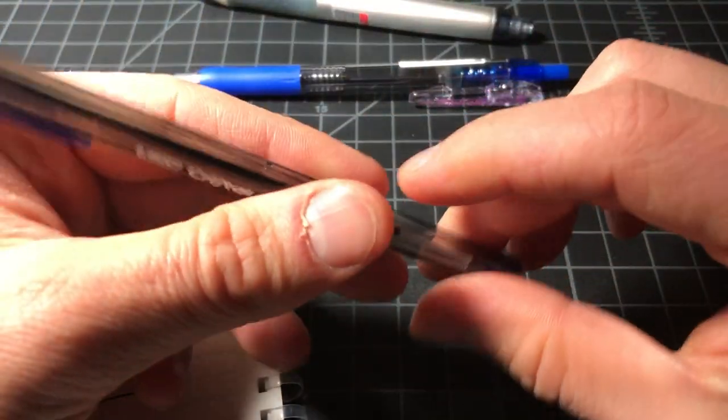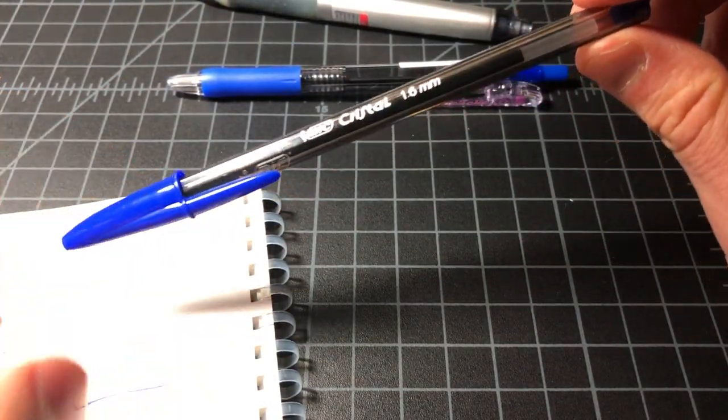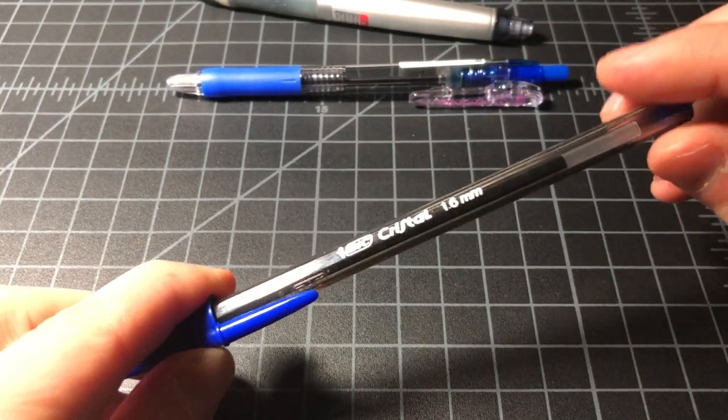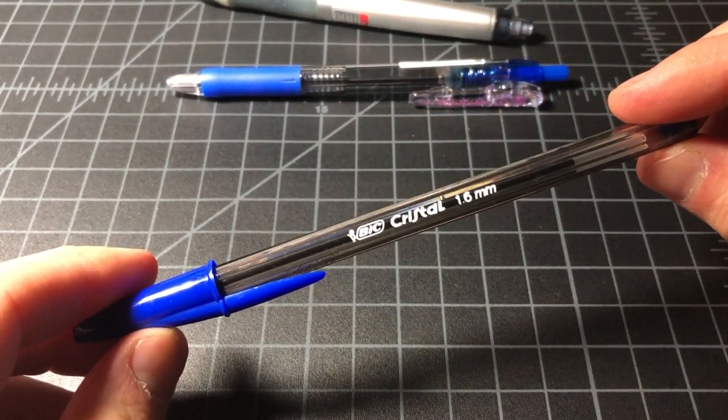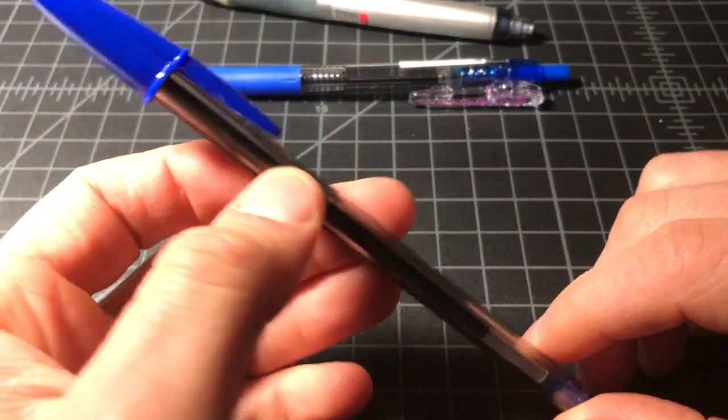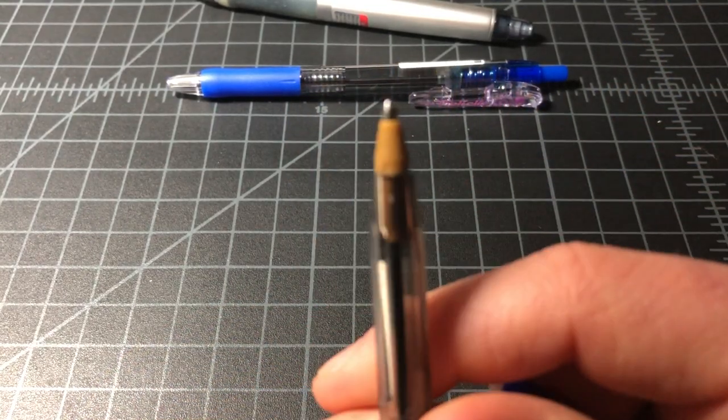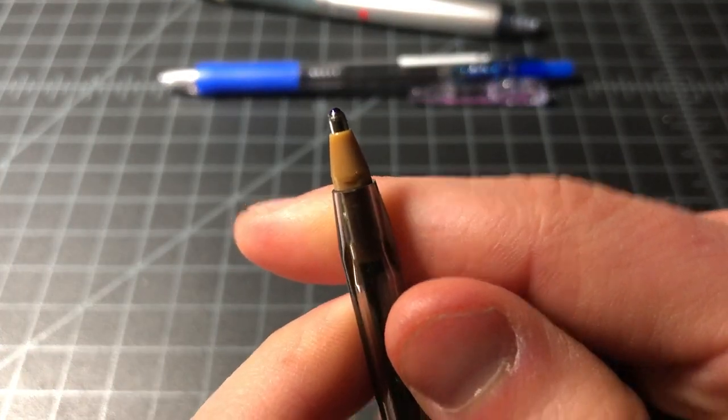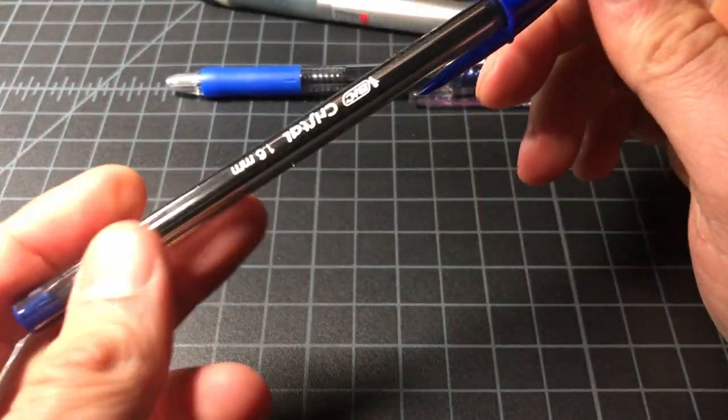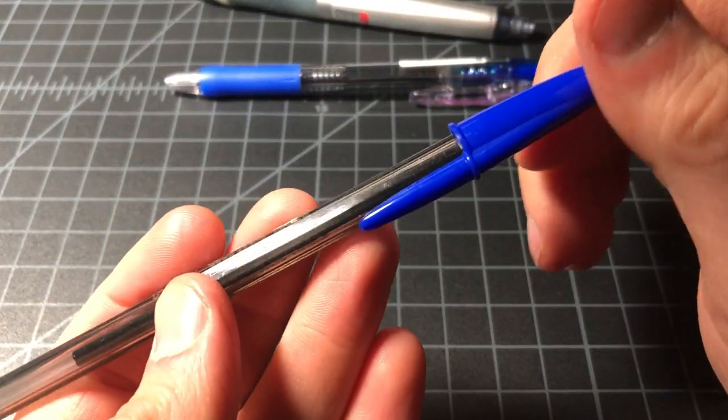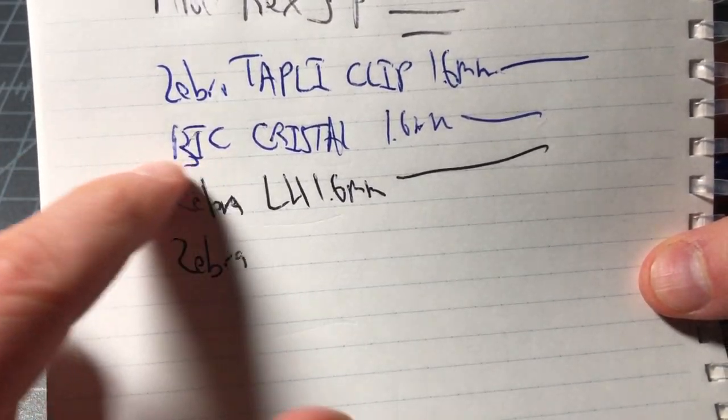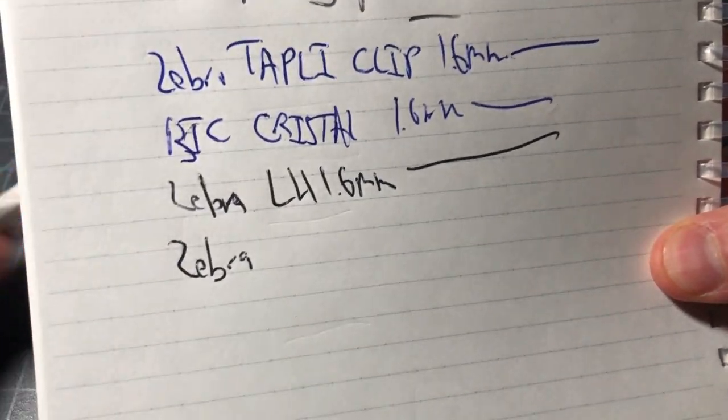Then we have the Bic Crystal. This is sold as the Bic Crystal Extra Bold which is a 1.6 millimeter. These are super affordable, maybe like 35 cents each, 30 cents each. You don't see them that often in the 1.6 millimeter, but it is definitely available and it works pretty well.